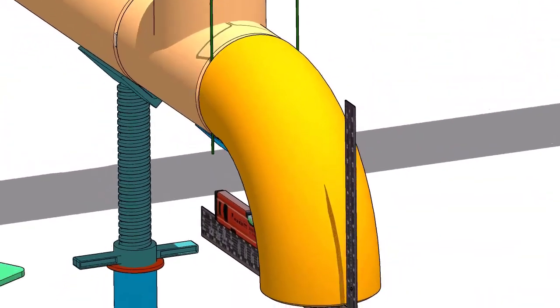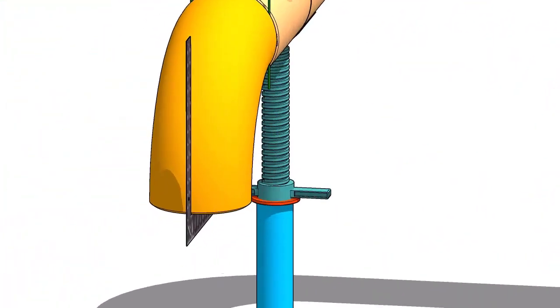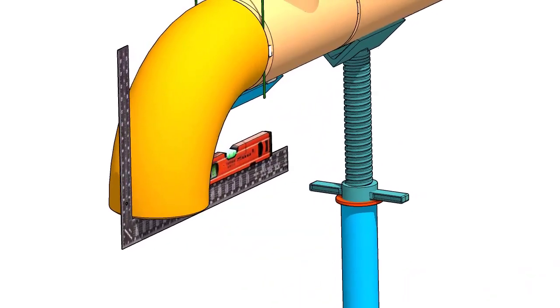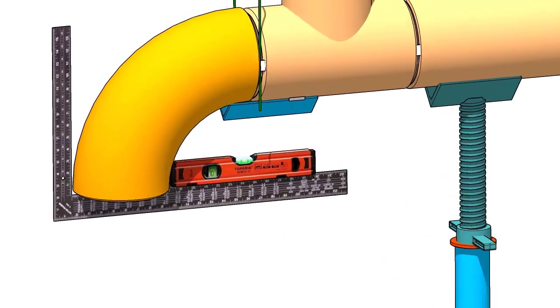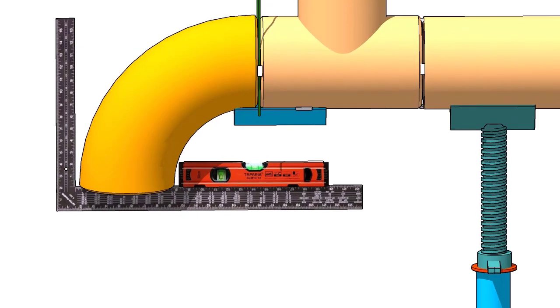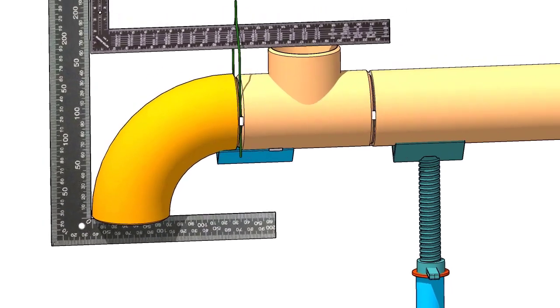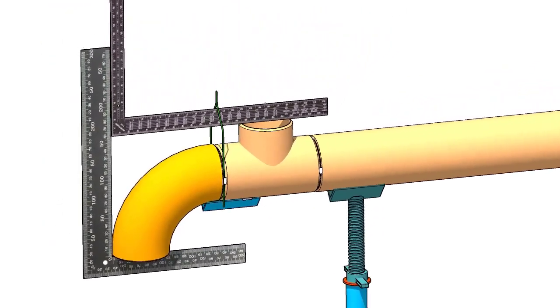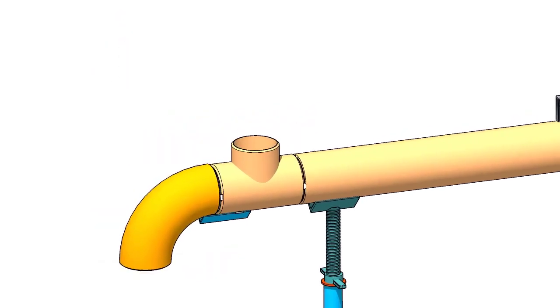Take the right angle and the spirit level longitudinal and maintain the elbow face level. Check the branch face and the elbow face are at right angles to each other.